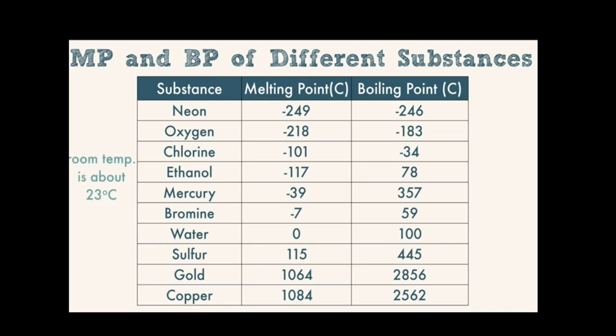At room temperature, which is around 23 degrees Celsius, everything that boils below 23 degrees is a gas, so that's neon, oxygen, and chlorine for this chart. Anything where 23 degrees is between the melting and boiling point is a liquid at room temperature, so that's ethanol, mercury, bromine, and water. And lastly, anything that has a melting point higher than room temperature is a solid at room temperature, like sulfur, gold, and copper.